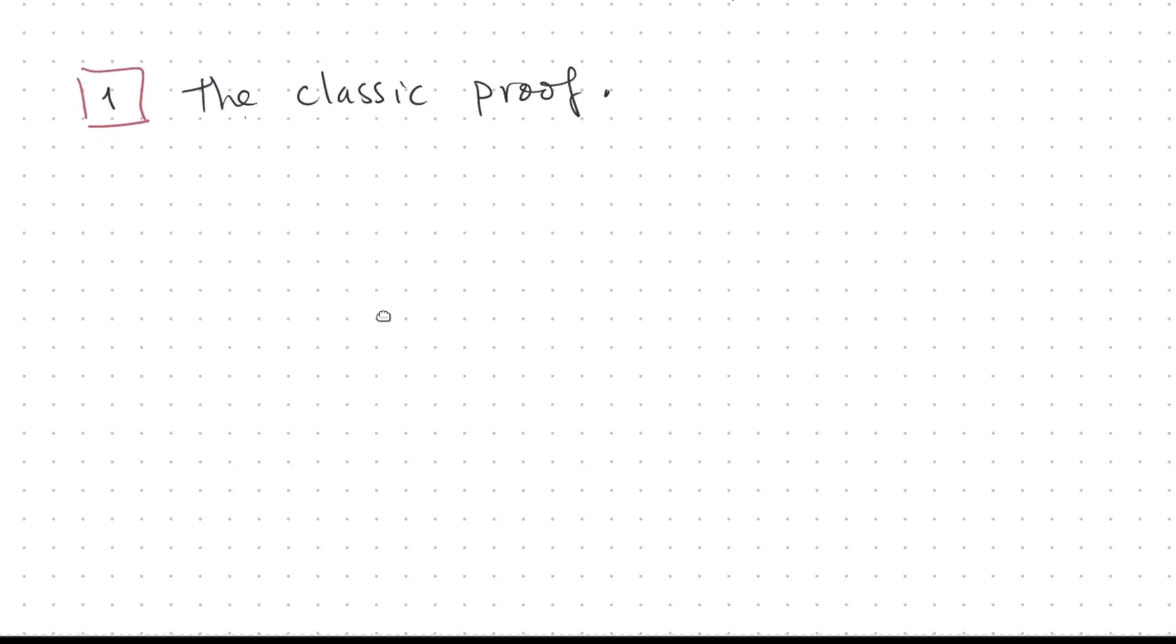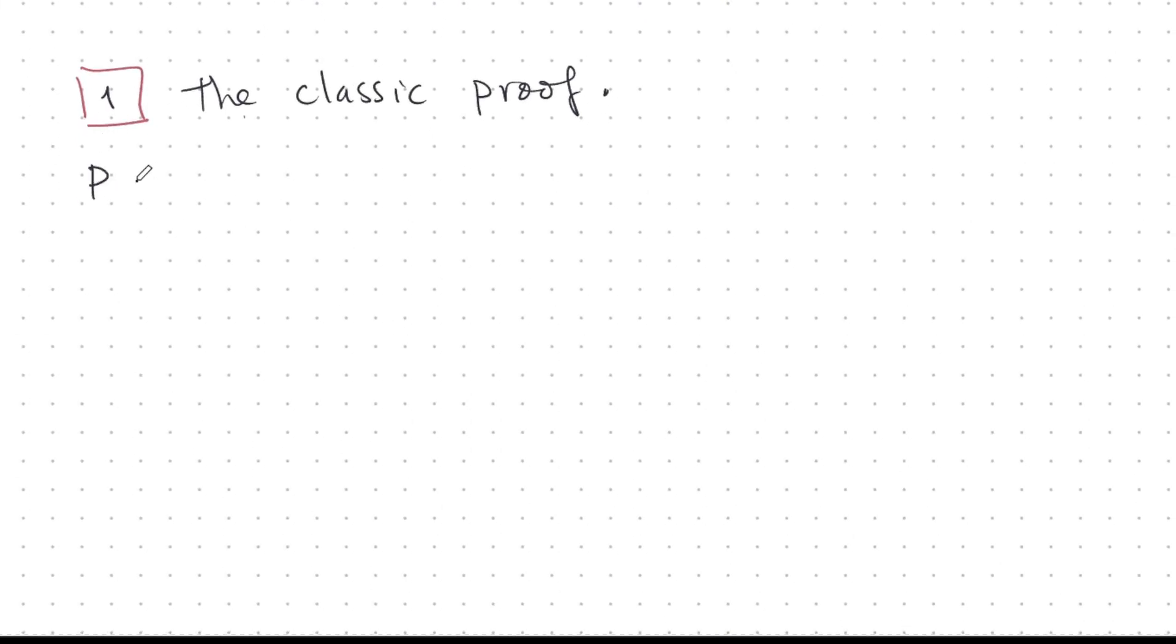For the classic proof, I need a lemma. Let's say P is prime, P is a prime number, and A, B are integers. Then if P divides A times B, then either P divides A or P divides B, or both. This is a very useful thing to know, and the classic proof relies on this. Note that it's not true if P is not prime. For example, 10 divides 6 times 35, but 10 does not divide 6 and 10 does not divide 35.